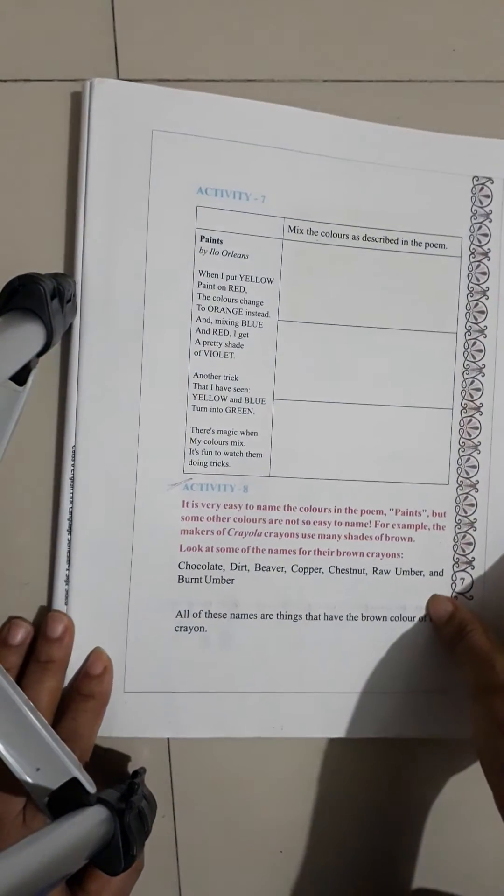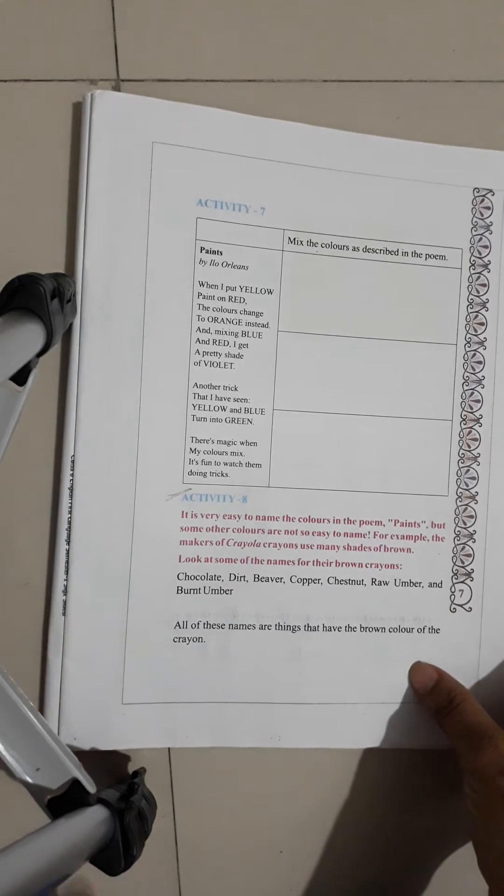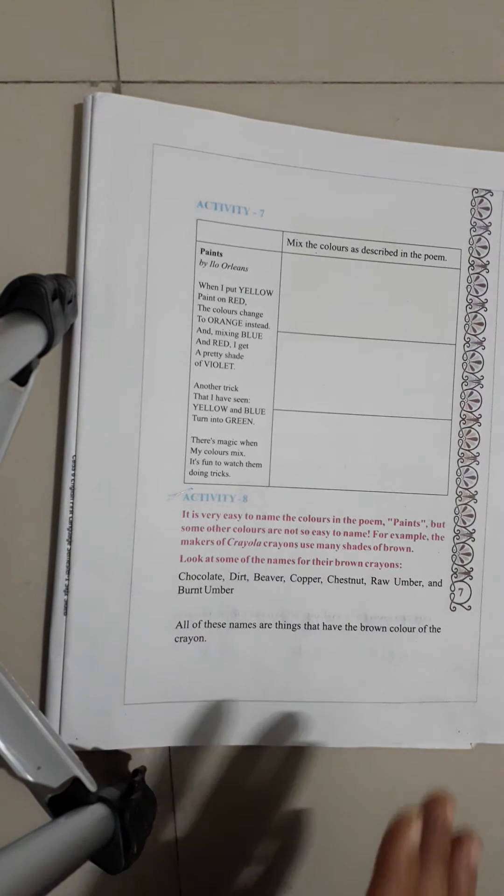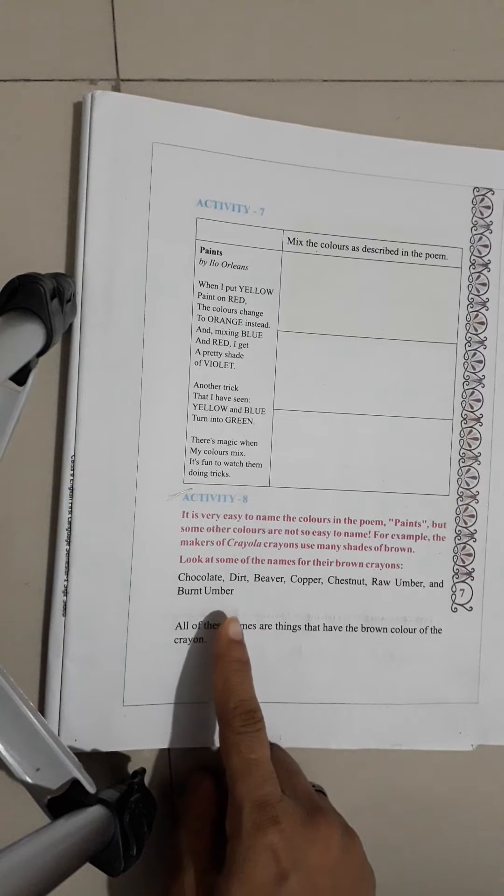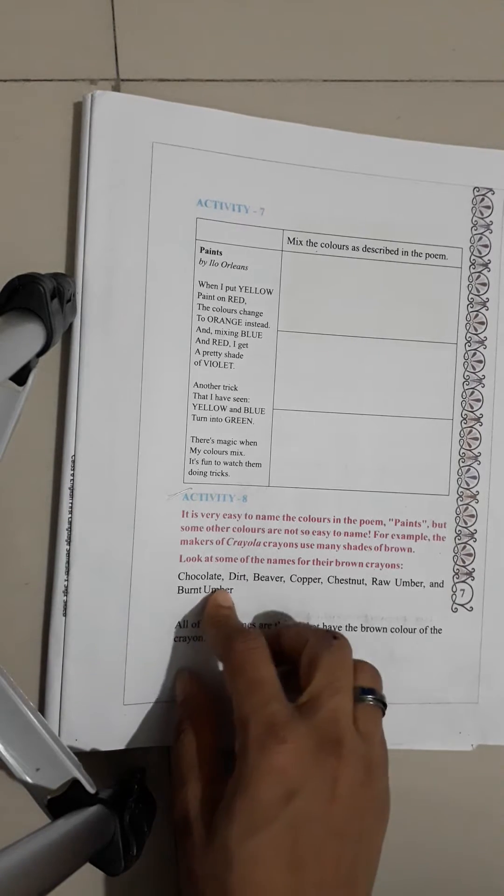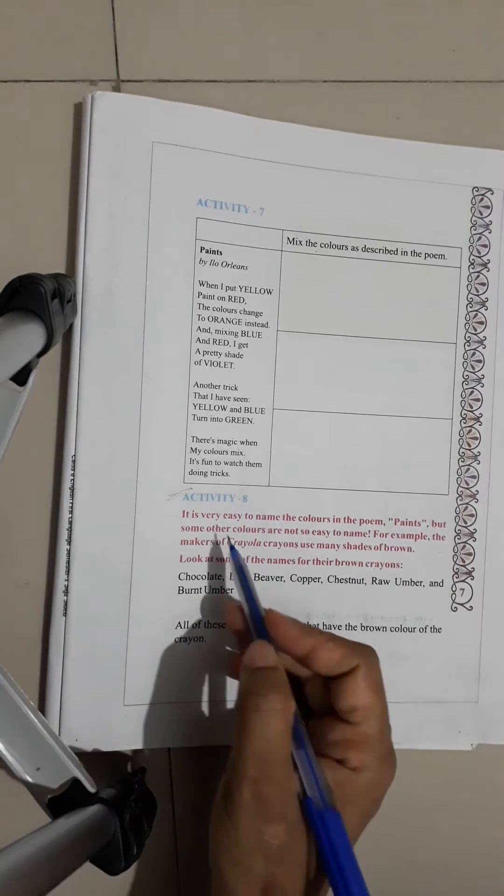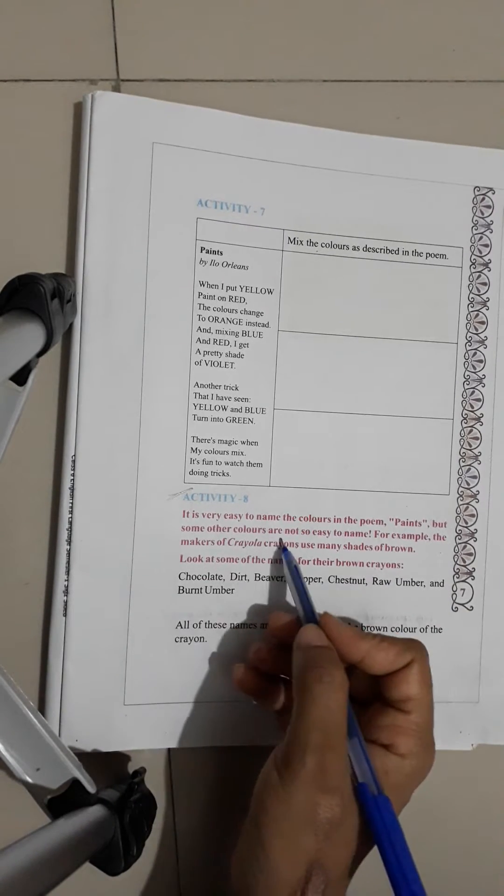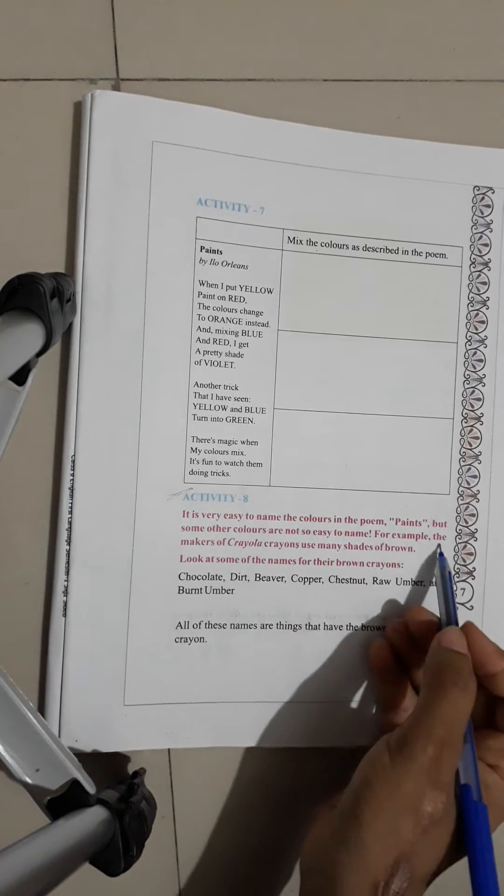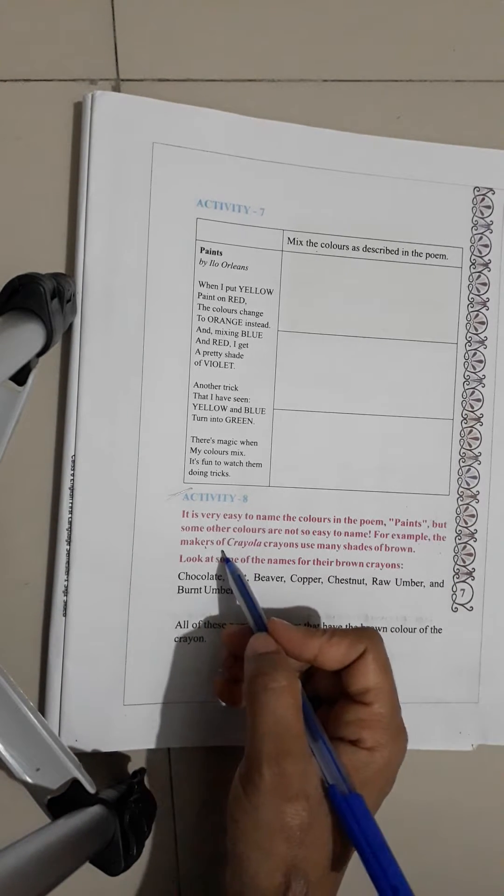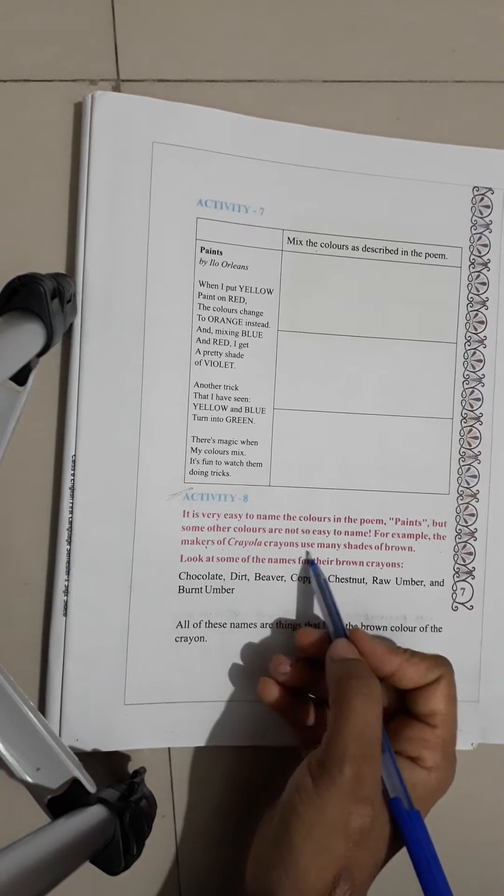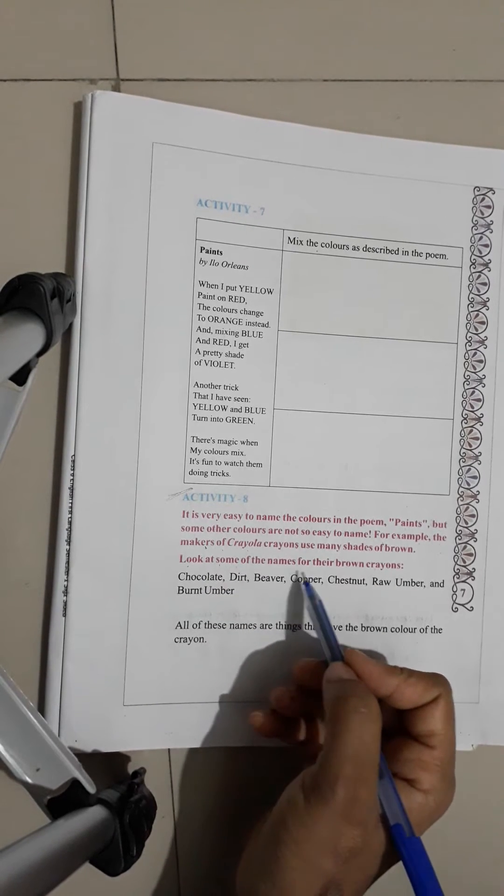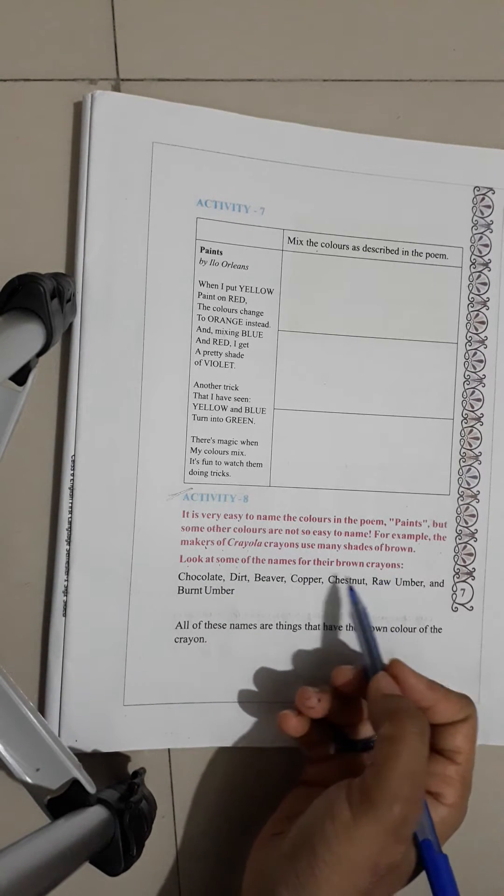Now, we will start from Activity 8. Activity 8: It is very easy to name the colors in the paints, but some other colors are not so easy to name. For example, the makers of Crayola crayons use many shades of brown. Look at some of the names for their brown crayons.